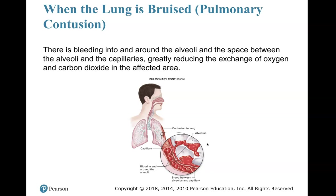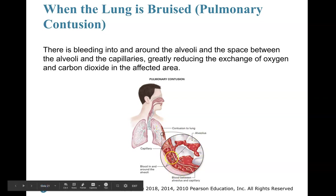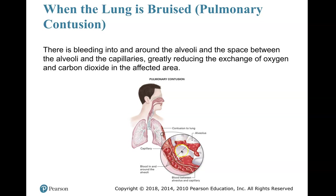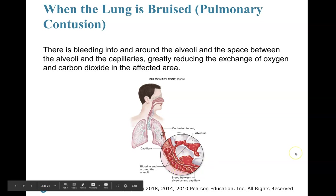When the lung is bruised — a pulmonary contusion — there's bleeding into and around the alveoli and the space between the alveoli and the capillaries, greatly reducing the exchange of oxygen and carbon dioxide. Looking at the diagram, you can see the capillaries with oxygenated blood and the blood vessels between them have burst, causing blood to spill into the alveolar sacs. There should be nothing but air and carbon dioxide moving in and out of those spaces. When blood fills up in there, it blocks gas exchange from the capillary to the alveoli, causing hypoxia.